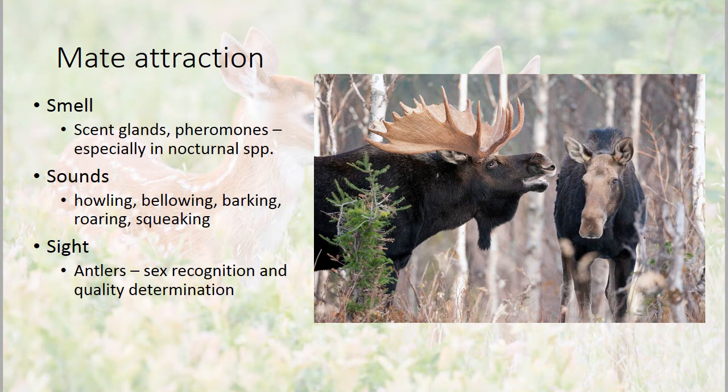For those that are crepuscular or diurnal, sight does come into play. Antlers are one of the easiest ways we can see mate attraction happening in mammals. Remember, antlers are usually only in males — the exception being caribou — and they serve both for sex recognition and for competing for mates, as the size and quality of antlers matter.